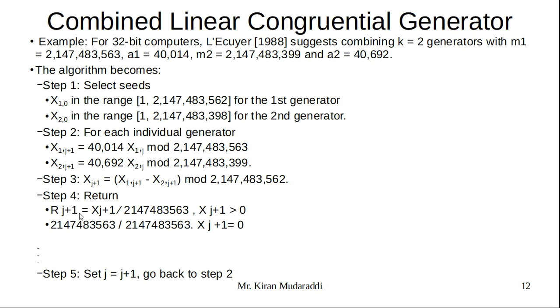We are comparing this value: if this value is greater than 0, we use this formula to calculate our random number. If X(j+1) equals 0, we use this formula to calculate the random number, and we return that as our answer. This method is used for generating different random numbers.